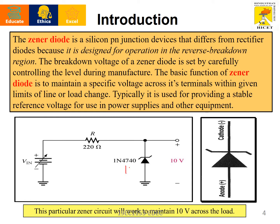For example, assume a 10-volt zener diode — this particular zener circuit will work to maintain 10 volts across the load. If you are using a 10-volt zener diode and your supply is 20 volts, it will allow only 10 volts beyond this component. Because of this, it acts as a voltage stabilizer. A zener diode is a silicon p-n junction device whose basic function is to maintain a specific voltage across its terminals.